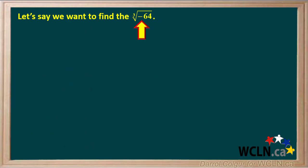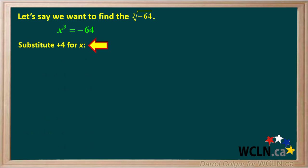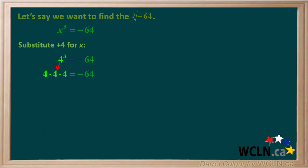Unlike square roots, we can find the cube root of a negative number. Let's find the cube root of negative 64 by writing x cubed equals negative 64. Substituting positive 4: 4 cubed equals 4 times 4 times 4, which equals positive 64. But positive 64 is not equal to negative 64, so positive 4 is not a correct cube root of negative 64.